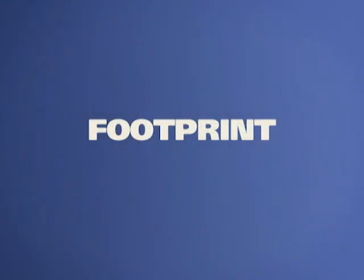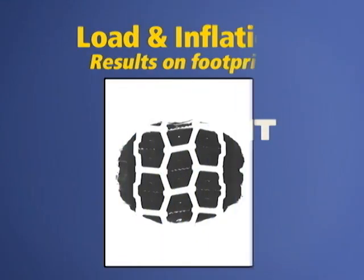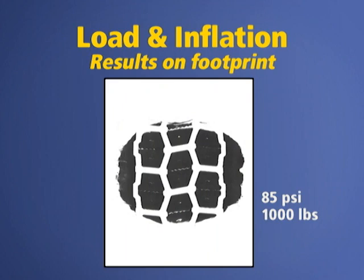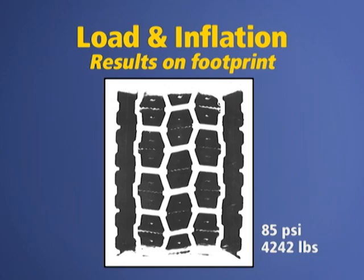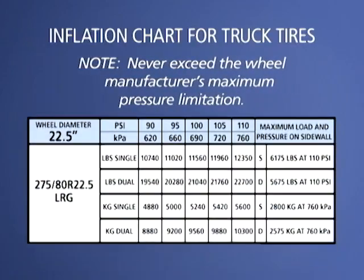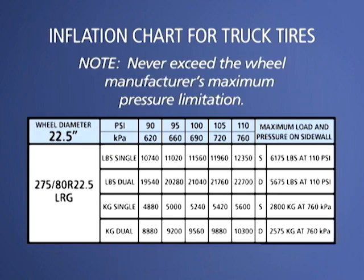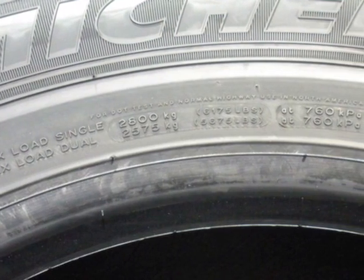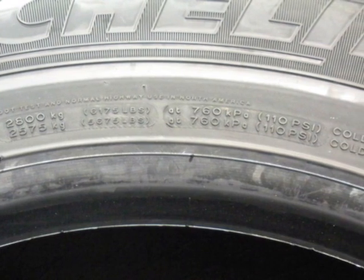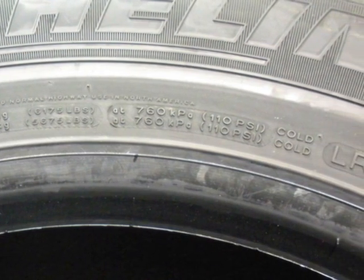Another factor is the footprint or contact patch size. The load and inflation pressure of the tire will significantly affect the size of the contact patch. The correct size for a contact patch is determined in the design process and is controlled by matching the correct inflation pressure to the load on the tire. Always check with the tire manufacturer for the correct pressure recommendation. Keep in mind that the pressure information molded on the sidewall of the tire, as required by government regulation, is not necessarily the correct pressure for your usage — it is the maximum allowed pressure for the tire.